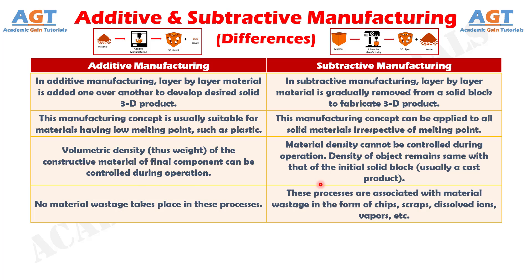Difference number 4. No material wastage takes place in additive manufacturing processes. Whereas, subtractive manufacturing processes are associated with material wastage in the form of chips, scraps, dissolved ions, vapors, etc.